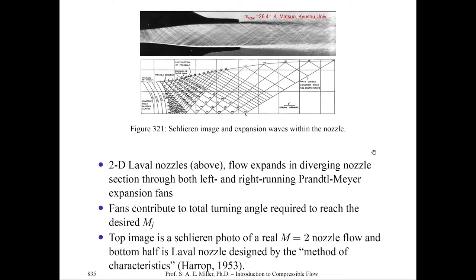The fans contribute to the total turning angle required to reach the desired fully expanded Mach number M_J. The fans terminate along the upper wall — the wall is turning into the flow, but no shock waves form because the characteristic net bounces off the wall and is canceled by the wall's turning. Therefore, there are no reflections. In the interior region of the nozzle, we find no waves at all — they've all been terminated by the wall itself — and we find the fully expanded Mach numbers. In this photo, we find a Mach 2 flow.